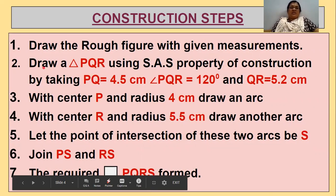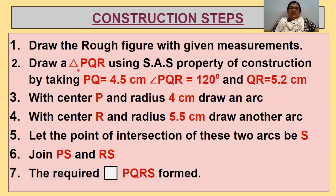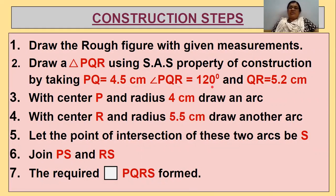The second step is: draw triangle PQR using the side-angle-side property by taking PQ = 4.5 cm, angle PQR = 120 degrees, and QR = 5.2 cm. If one angle and two sides are given, you can draw a triangle — this knowledge was covered in Class 7. From that triangle, we build the quadrilateral.